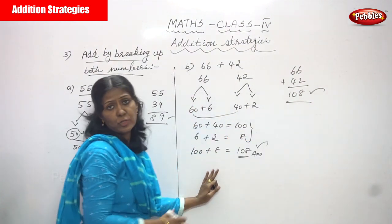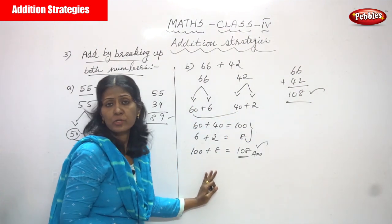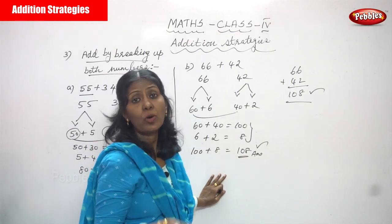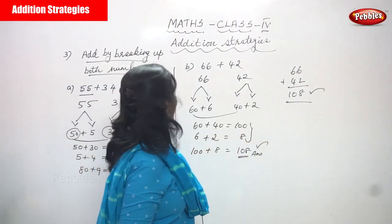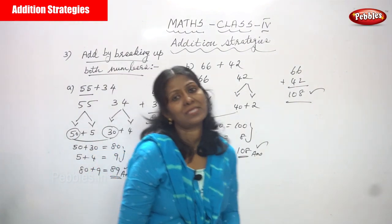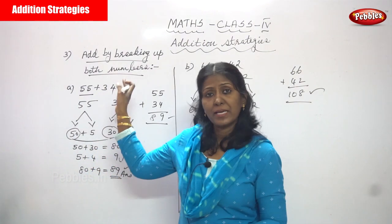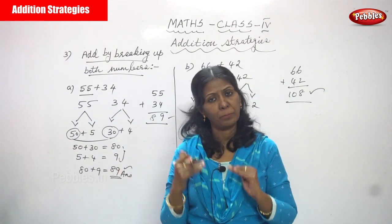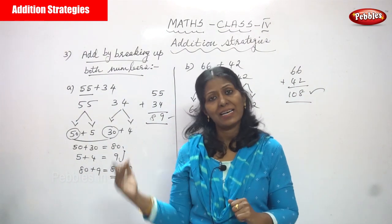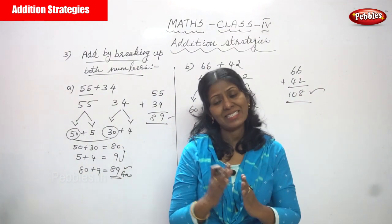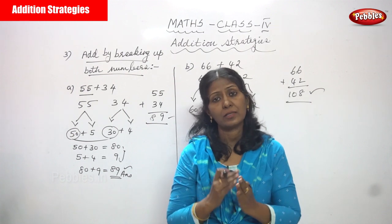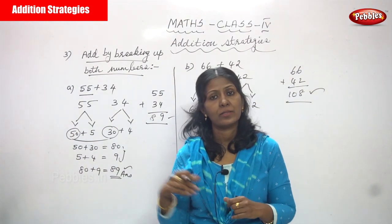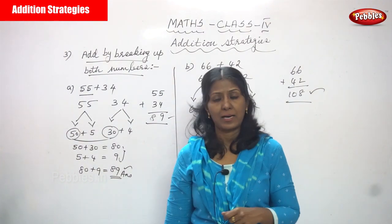This is the addition strategy method. The strategy we follow is: add by breaking up both numbers. You break up both numbers, first add the tens, then add the ones, and finally combine them together to get the final answer.